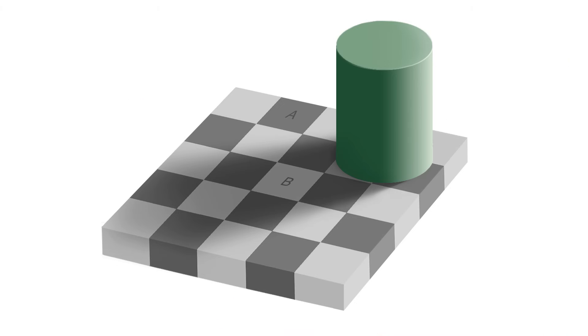The tile illusion takes advantage of this phenomenon. Our brains know that shadows make objects look darker. As a result, the brain compensates by interpreting the tile as being lighter than it appears, until we take the shadow away.